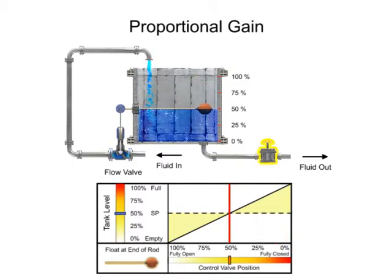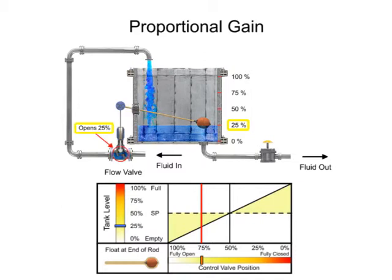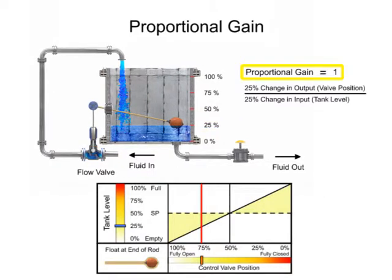Opening the drain valve increases the load demand which causes the tank level to drop by 25%. The float drops and the valve opens 25%, which allows more fluid flow to enter the tank. A gain of 1 is demonstrated in this mechanism since the 25% change of input or tank level results in a 25% change of output or valve position.